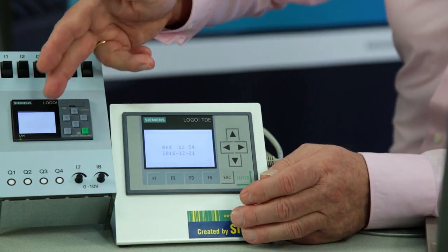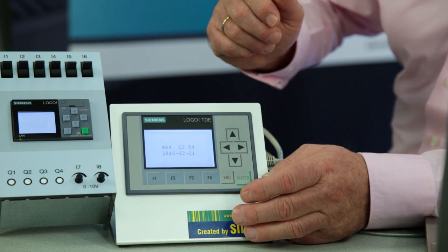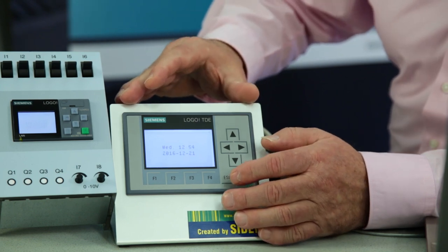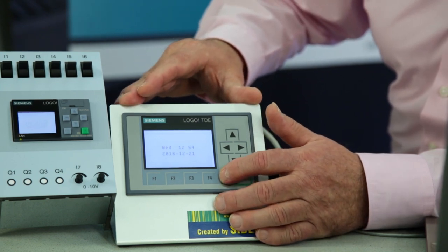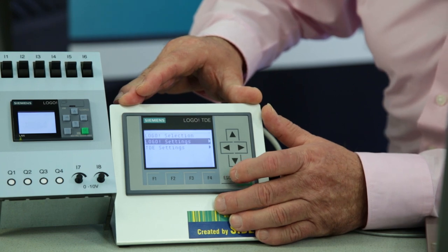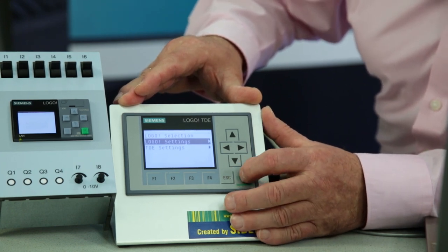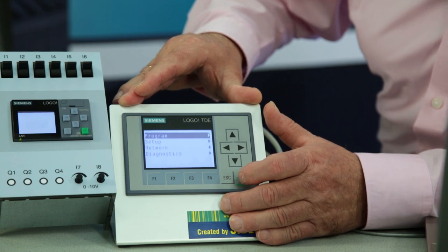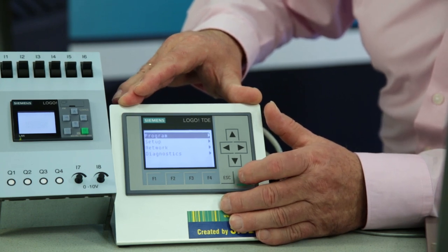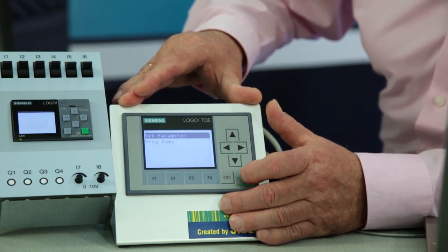The unit's basic display shows the date and time. In this display I can change over to the LOGO settings by pressing the ESCAPE button. There I select the menu item Program and see the function Set parameter.